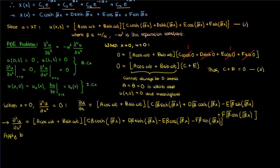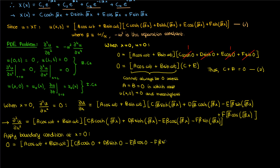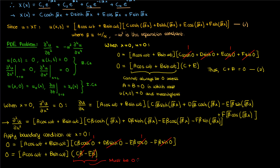We apply the boundary condition by substituting x equals 0 into our second partial derivative in x and setting the left-hand side to zero. Again the sines — both hyperbolic and regular — become zero, and the cosines become one. Beta is just a non-zero constant so it cancels from both sides. Since the time function cannot always be zero, the term multiplying it must be zero. As a result, c minus e must be zero, so c equals e. I'll call this equation 3.